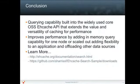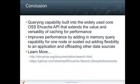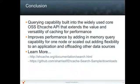Summing up, eHcache search is a querying capability built into the widely used core open source eHcache API. It extends the value and versatility of caching for performance by adding in-memory querying capabilities for one node or scaled out to many, adding flexibility to an application and offloading other data sources. To learn more about eHcache search, go to eHcache.org or download the sample code at the link below. Thank you.